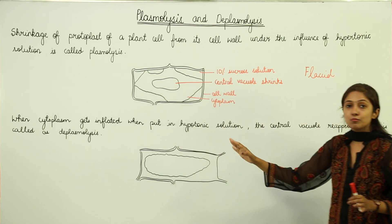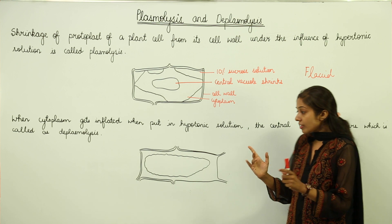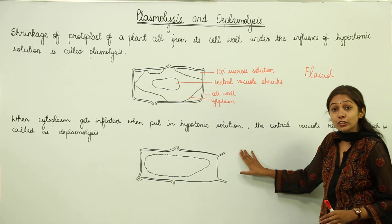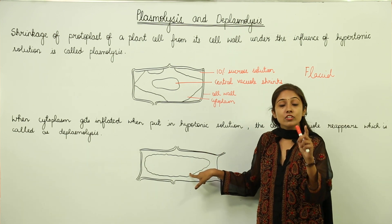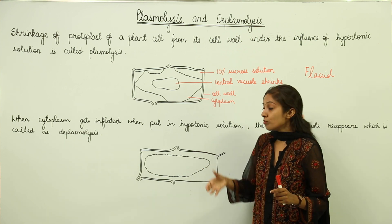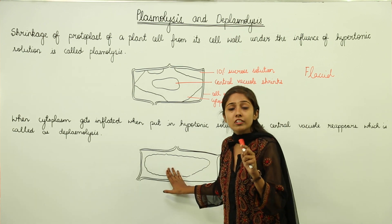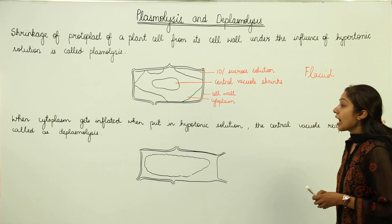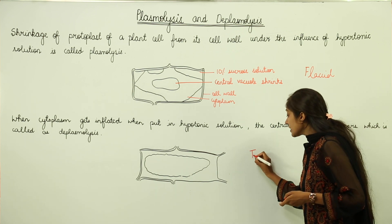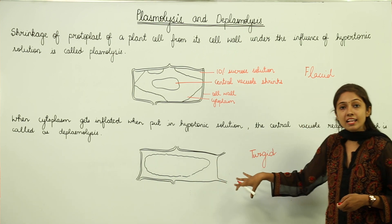This stage, when no more water can be accommodated because it is a hypotonic solution outside — meaning water enters from outside to inside because the concentration of water is more outside than inside — makes the cell fully distended, with no capacity for more water molecules to enter. This stage is known as the turgid cell stage and the process is known as turgidity.